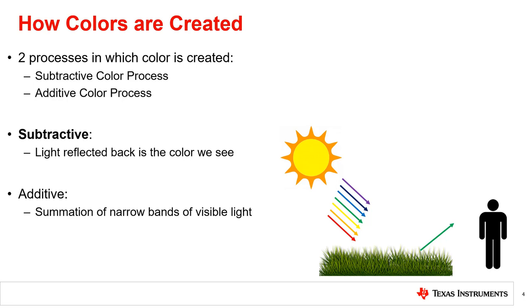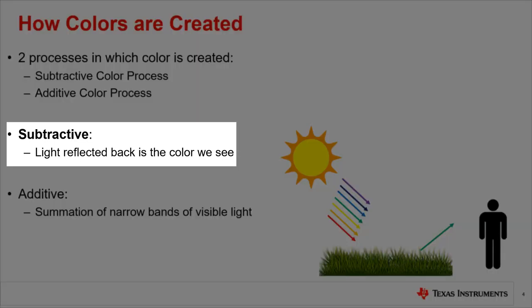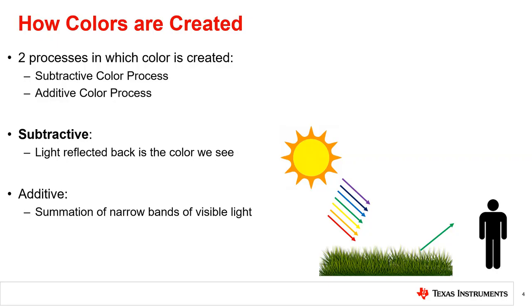There are two processes in which color is created: subtractive and additive. The subtractive color process is done by absorbing particular wavelengths, which are subtracted from the full spectrum of visible light, or white light. The wavelengths that are reflected back off the surface make up the color that people see. This is a process done in everyday viewing of our surroundings.